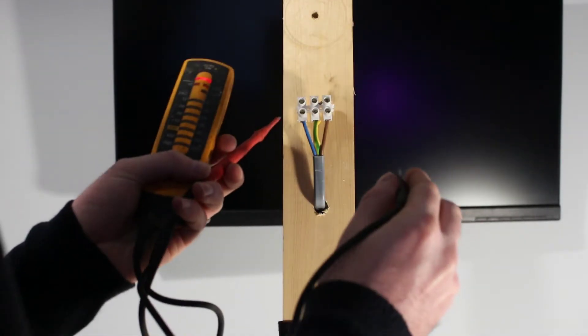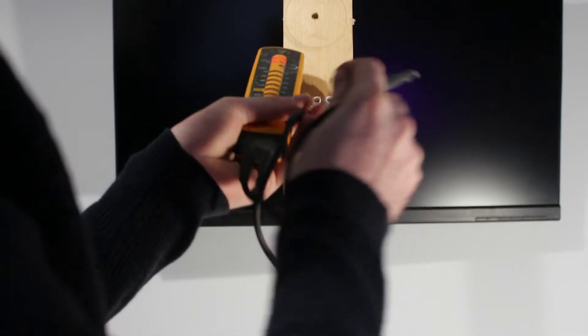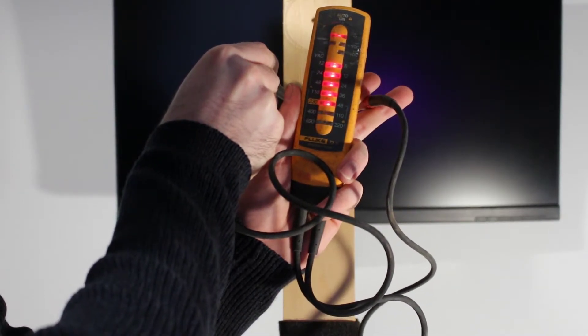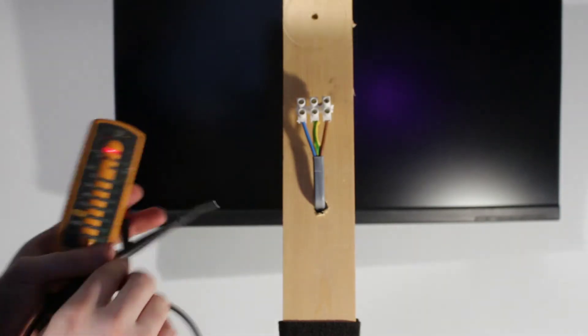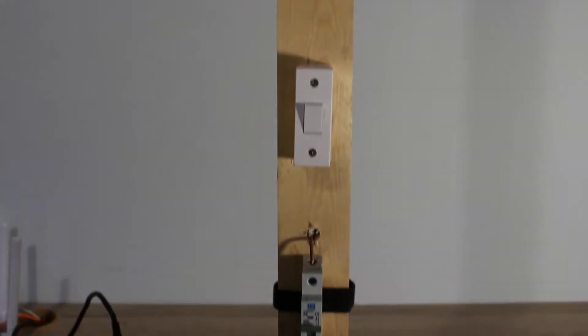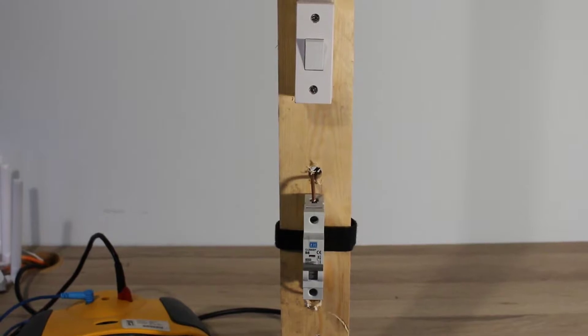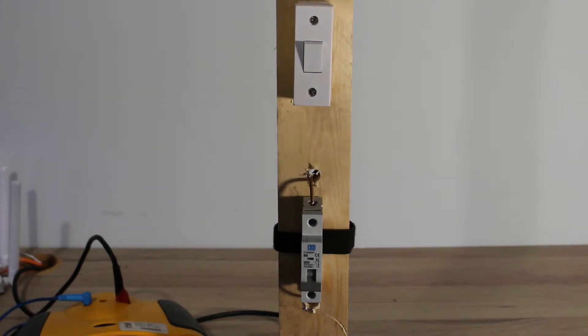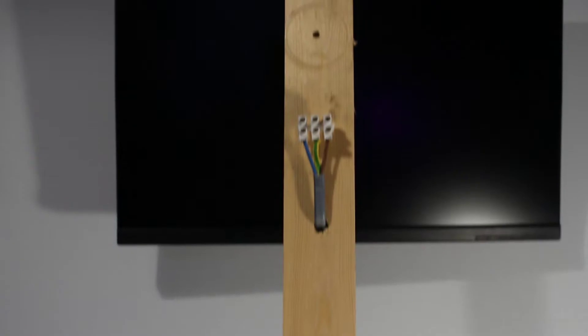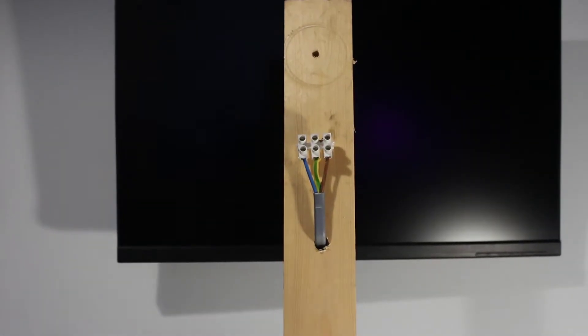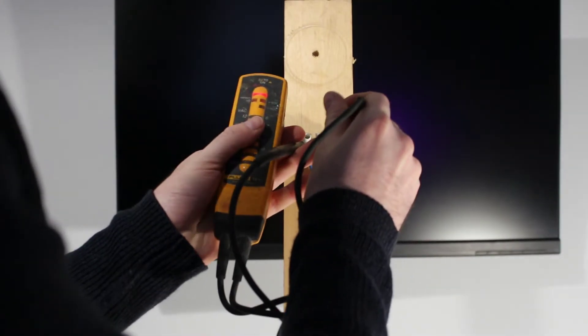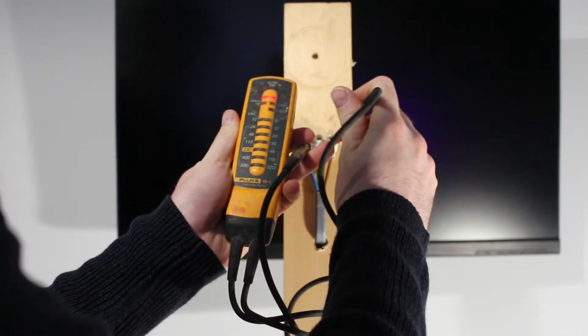For this bit we're going to go through how to do a proper safe isolation. First of all, with any isolation we check that it's live before we start. Next thing we're going to do is go to our fuse board and look for a breaker that's normally going to have either 6 or 10 amp written on it, denoted by probably B6 or B10. That'll be a lighting circuit. We'll turn that off, hopefully it'll be marked up, but if not we'll find out by testing. Now as you can see there's no voltage on that.